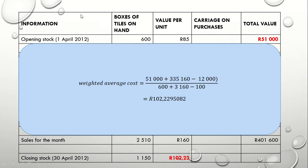As mentioned in the previous video, you need to round that off. So you will use 102.02 as the average price to calculate the value of your closing stock. Multiply 102.02 by 1,150 units, and it will give you $117,565, which is the value of your closing stock.